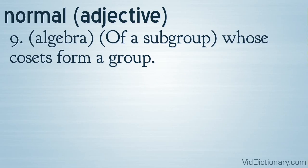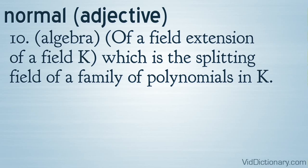Definition 9: Algebra — of a subgroup, whose cosets form a group. Definition 10: Algebra — of a field extension of a field k, which is the splitting field of a family of polynomials in k.